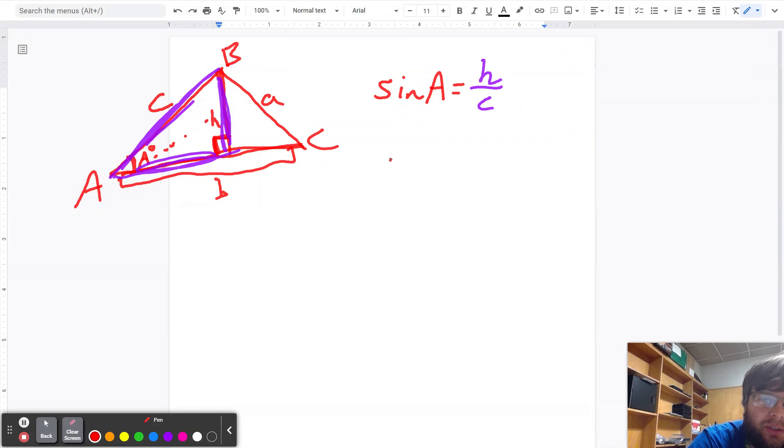Then I can go over to a different side, a different triangle. So this triangle, this one over here, is a triangle with the angle being C degrees right here.